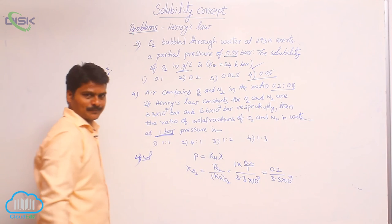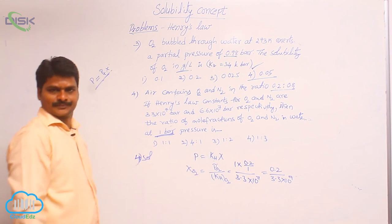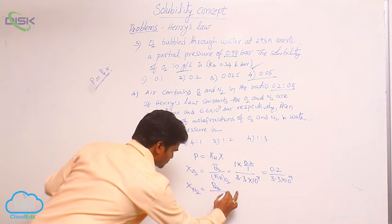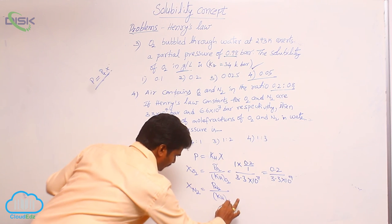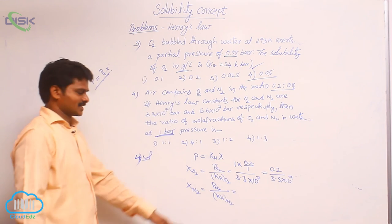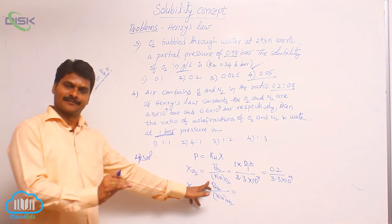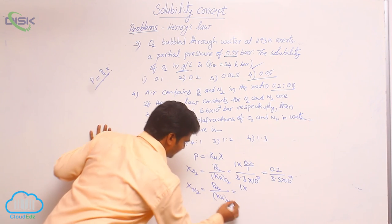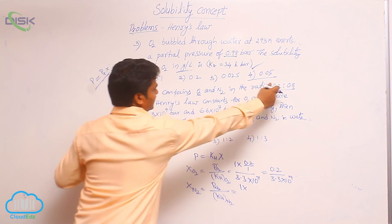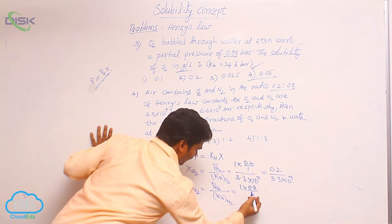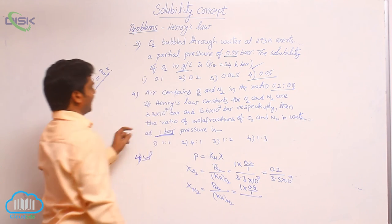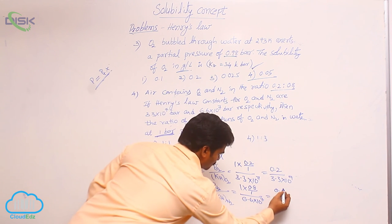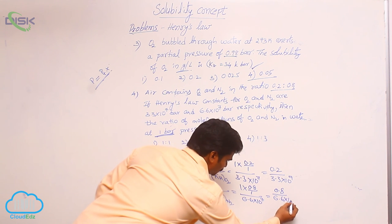Similarly, the mole fraction of nitrogen in the liquid phase: partial pressure of nitrogen in the mixture divided by Henry's law constant of nitrogen. Partial pressure of nitrogen equals total pressure 1 bar into its mole fraction in the gas phase, which is 0.8. So partial pressure of N2 is 0.8 bar, divided by K_H for nitrogen, 6.6 into 10 power 7. That gives a final value of 0.8 by 6.6 into 10 power 7.